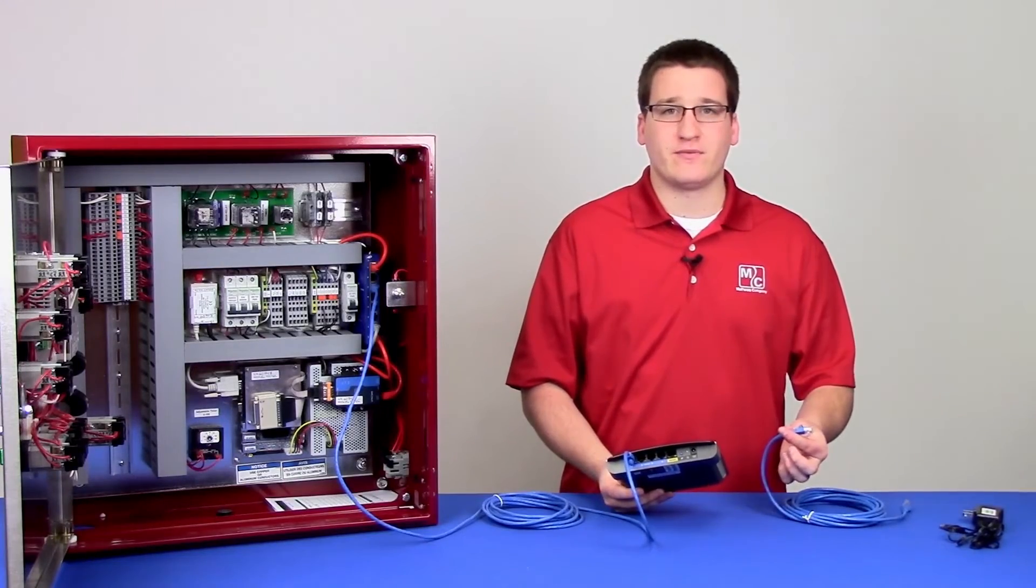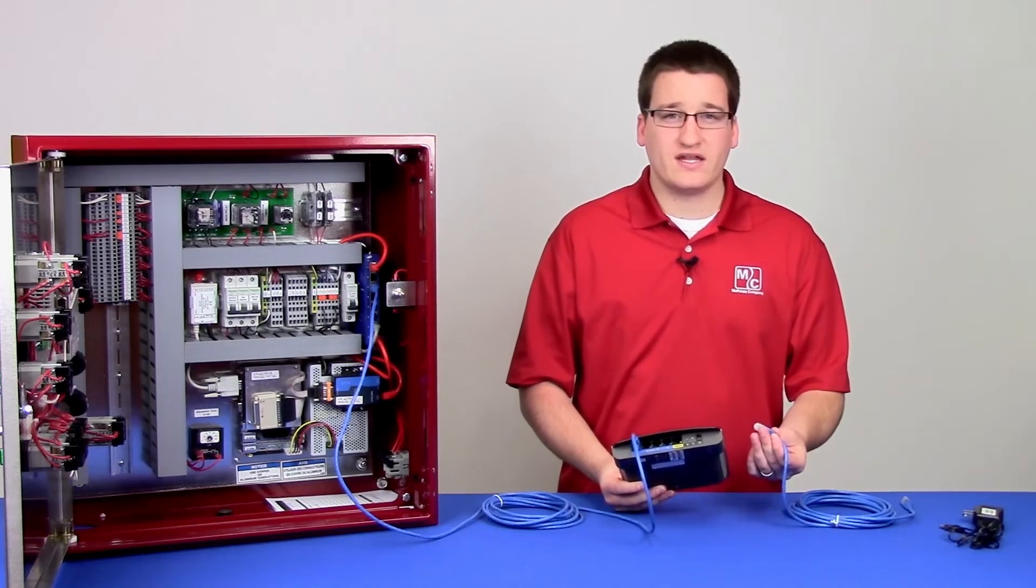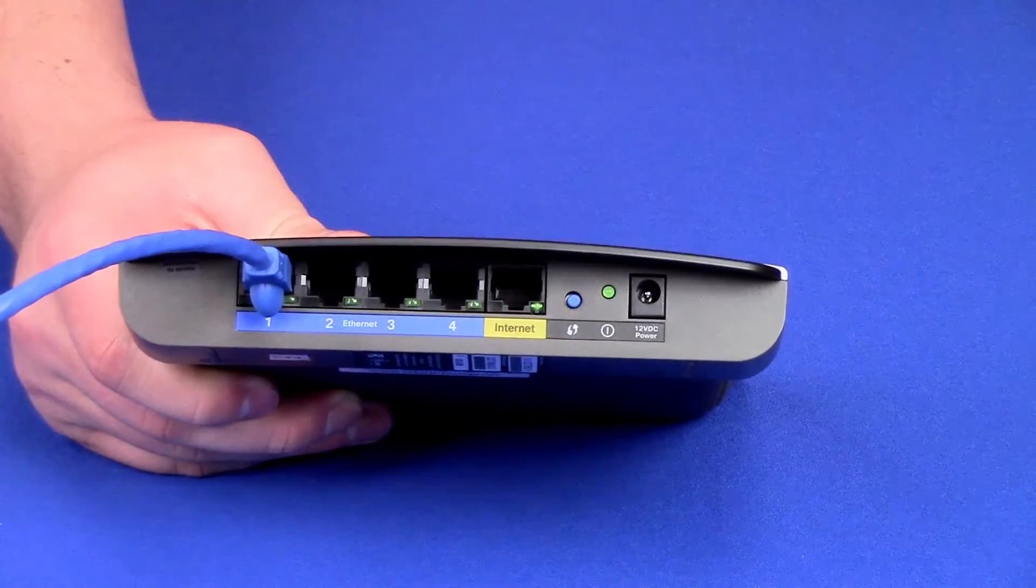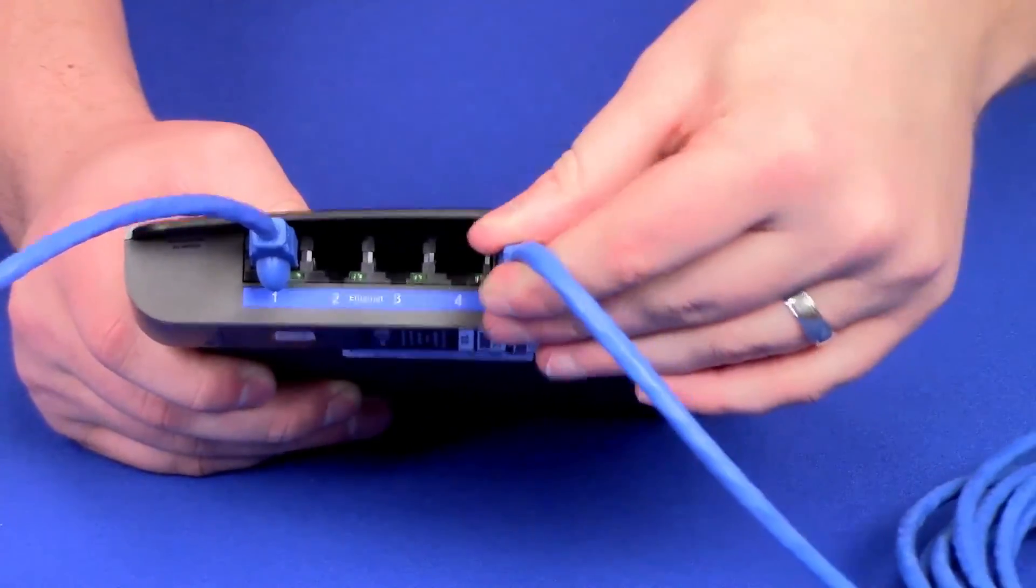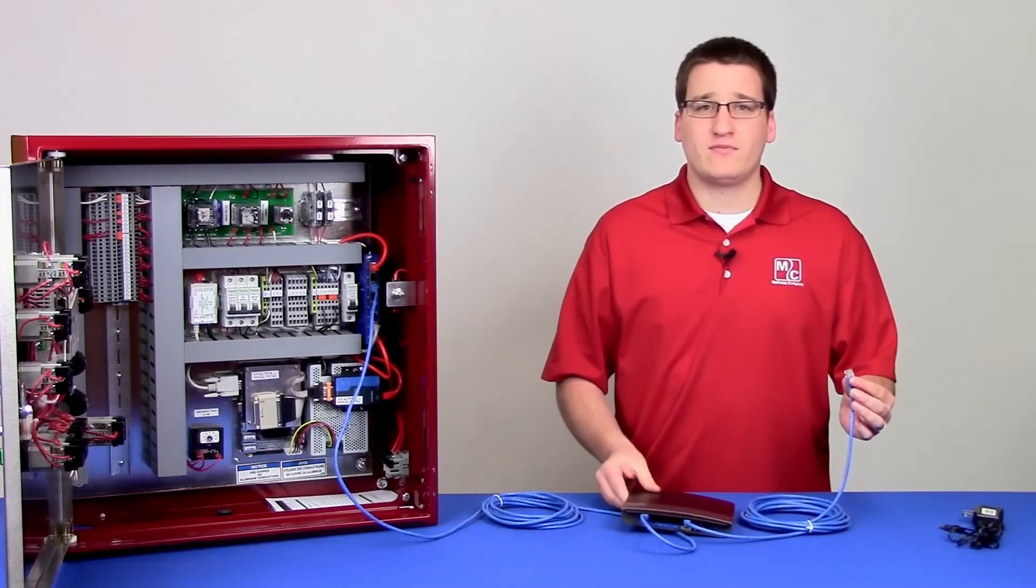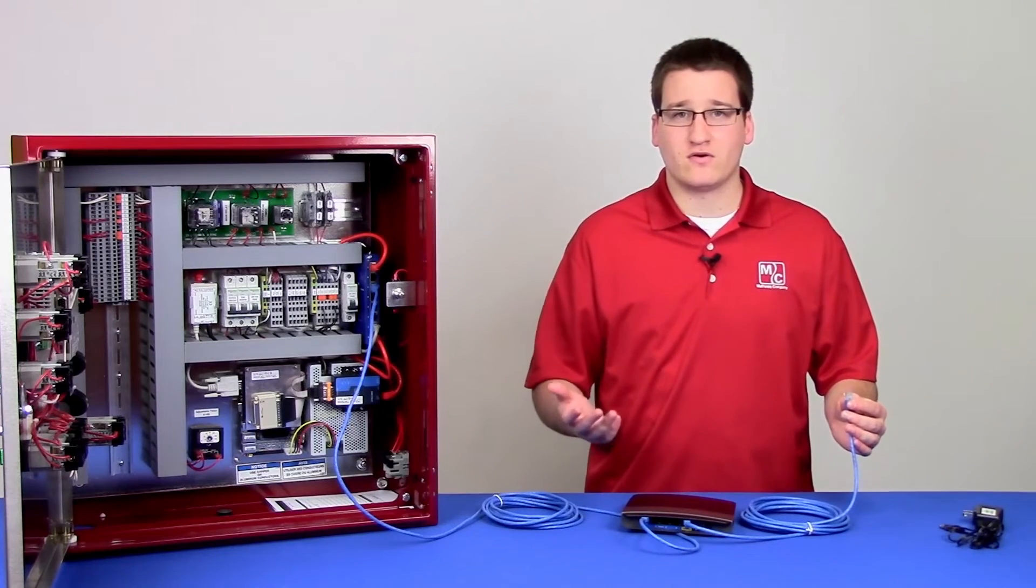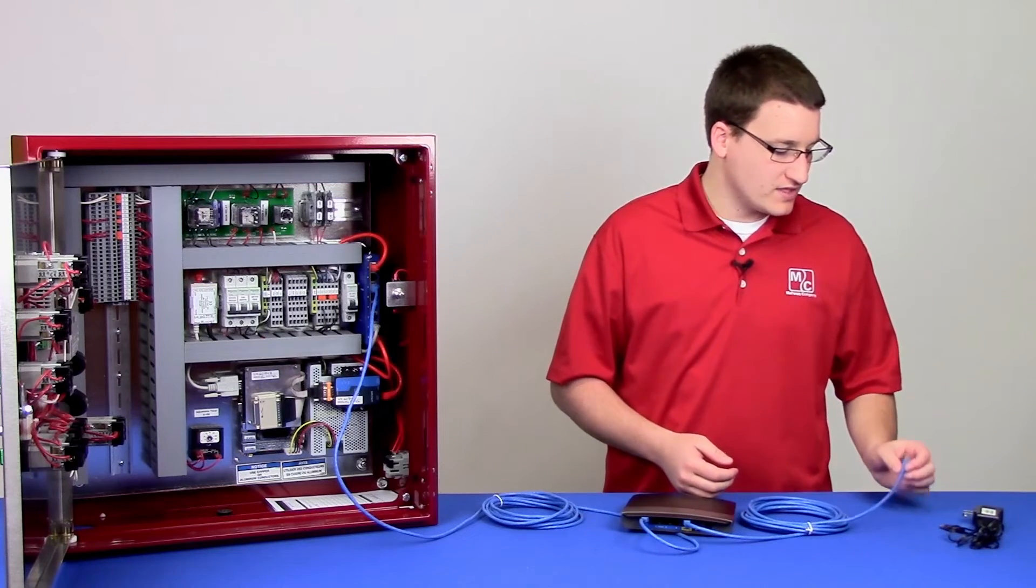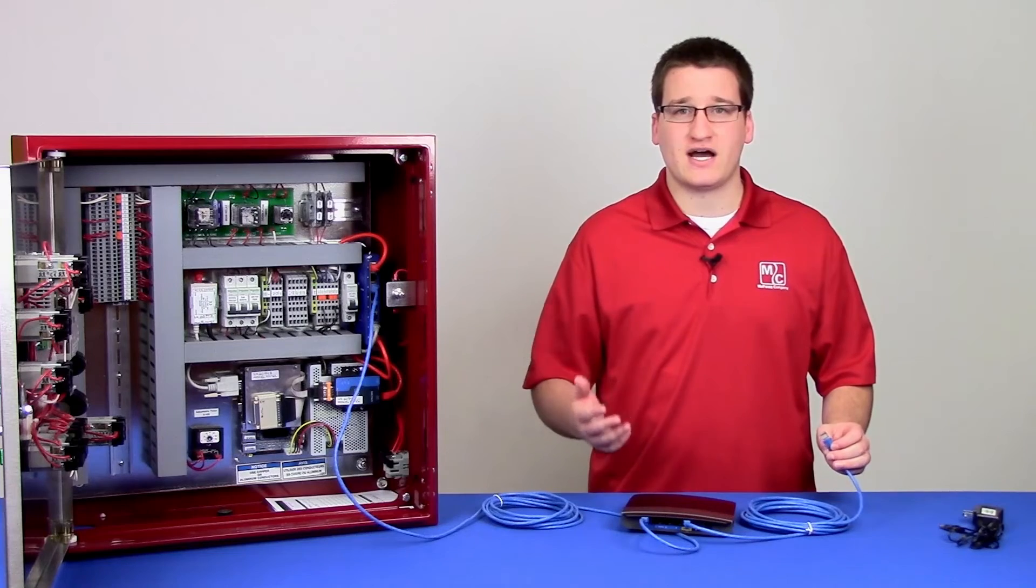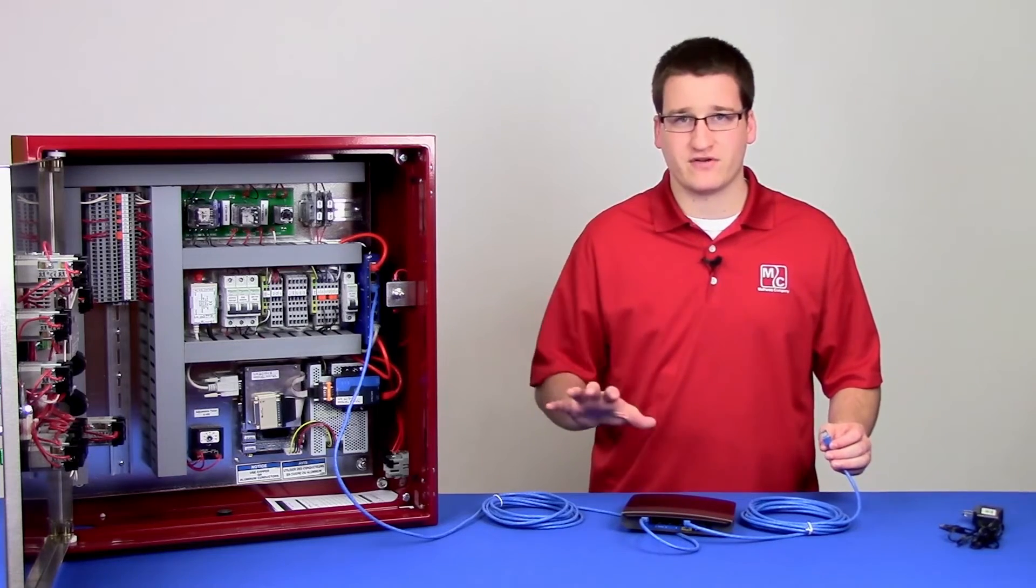You'll now take your second ethernet cable and plug one end into the back of the router in the internet port. The other end of this cable will have to go to your internet that's been provided by a local internet provider. If you want to test the components here and you don't have an internet connection, you can use a hotspot on your phone to temporarily make sure everything's working.